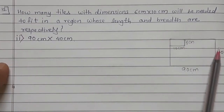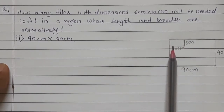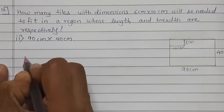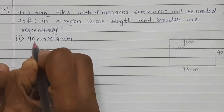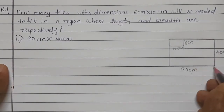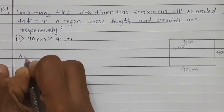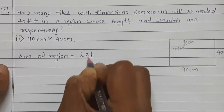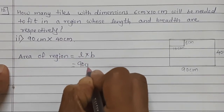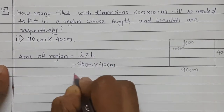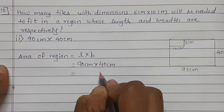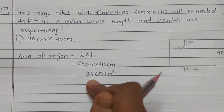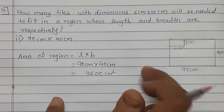We are going to find the area of this region first, then the area of this tile, and then the number of tiles. The length of this region is given as 90 cm and breadth is given as 40 cm. Area of region is equal to length multiplied by breadth: 90 cm multiplied by 40 cm. Count the zeros — two zeros — 9 fours are 36, so the area of region is 3600 square centimeter.